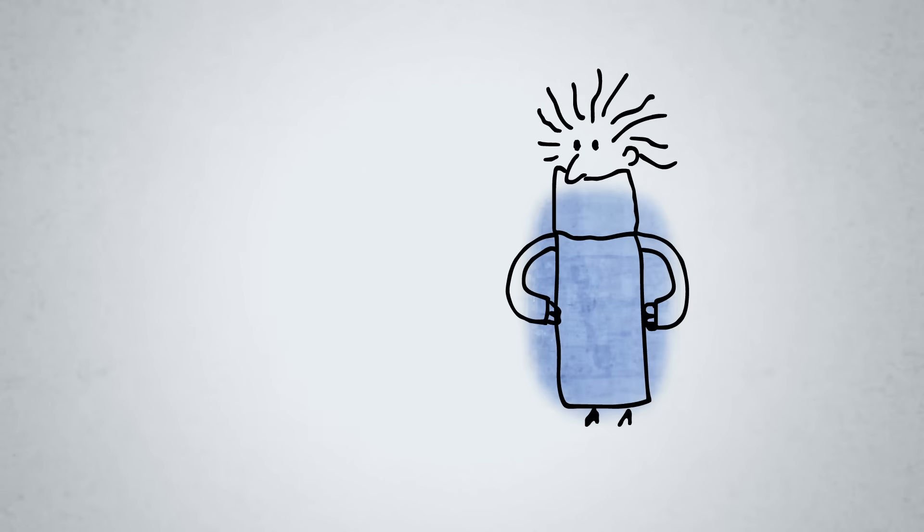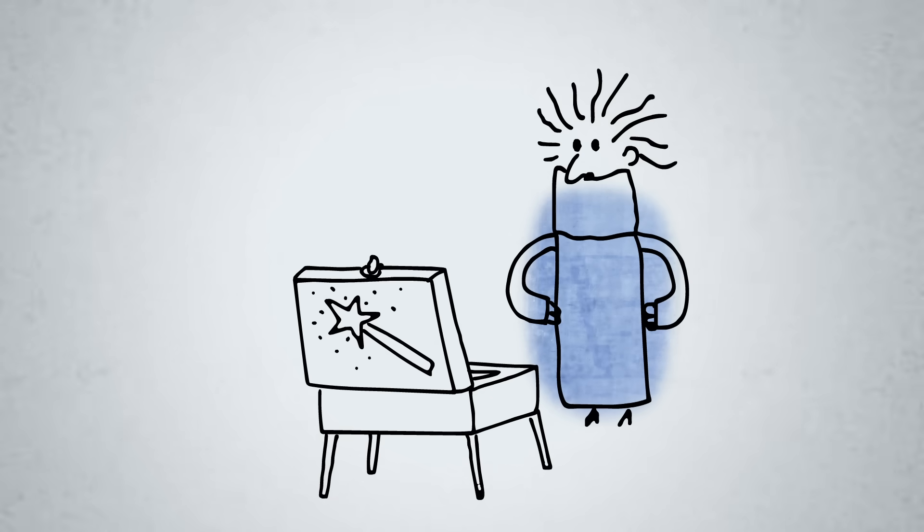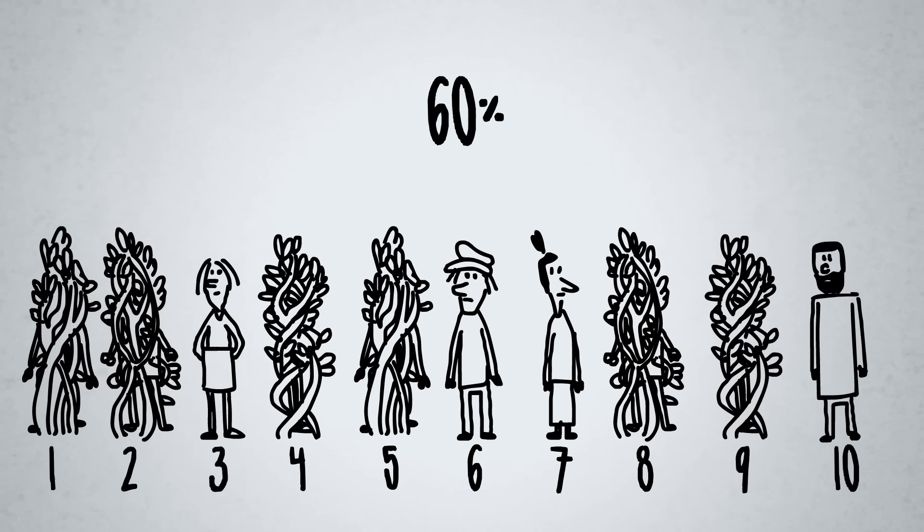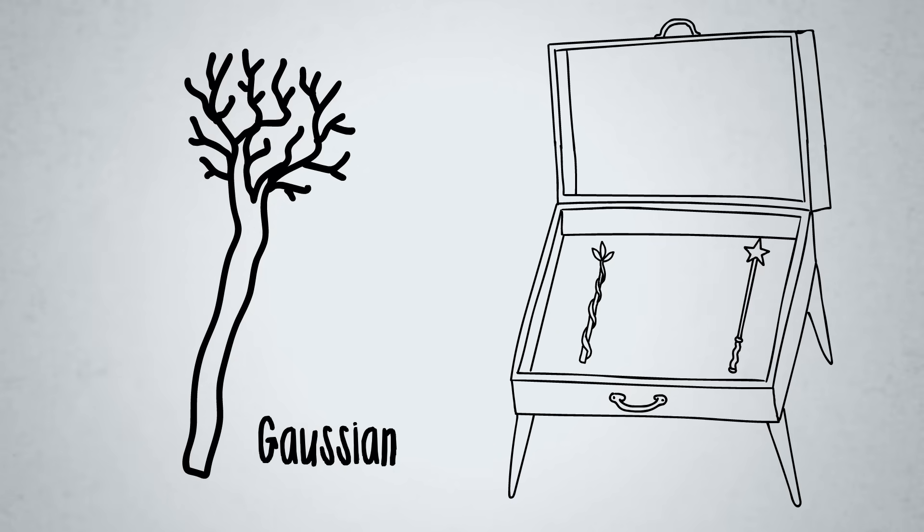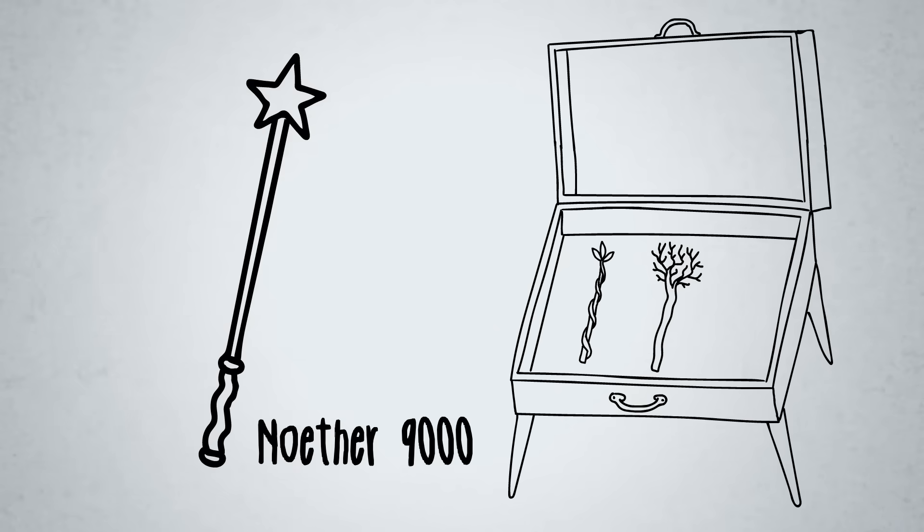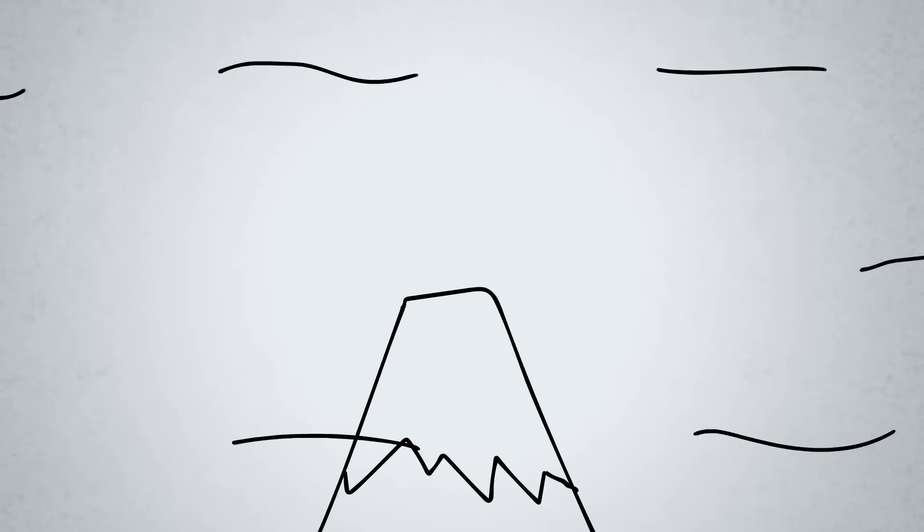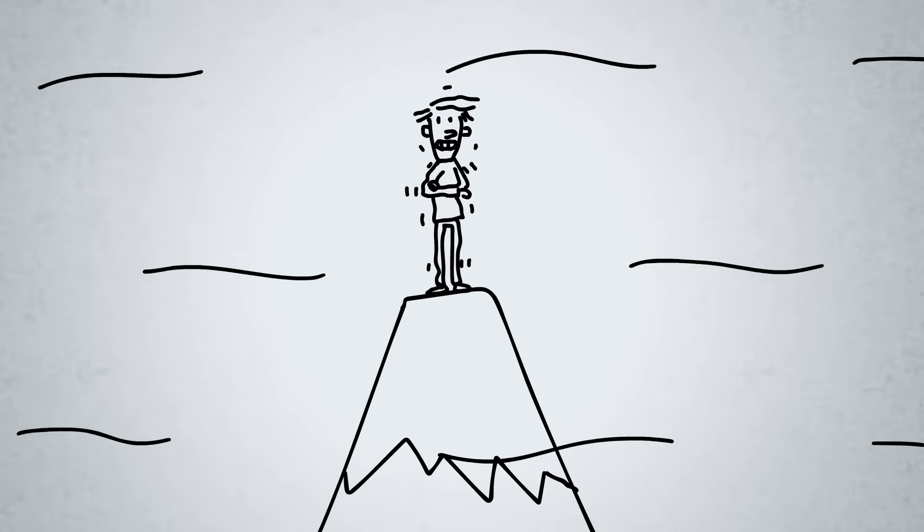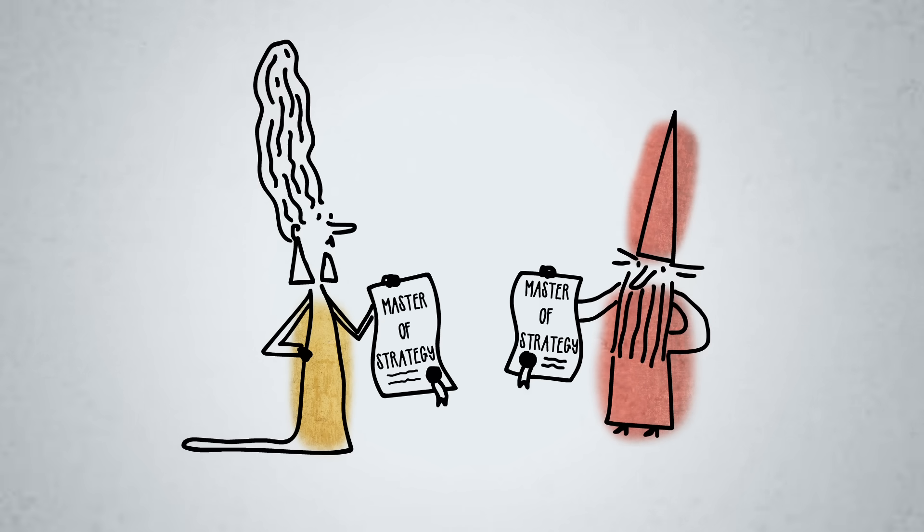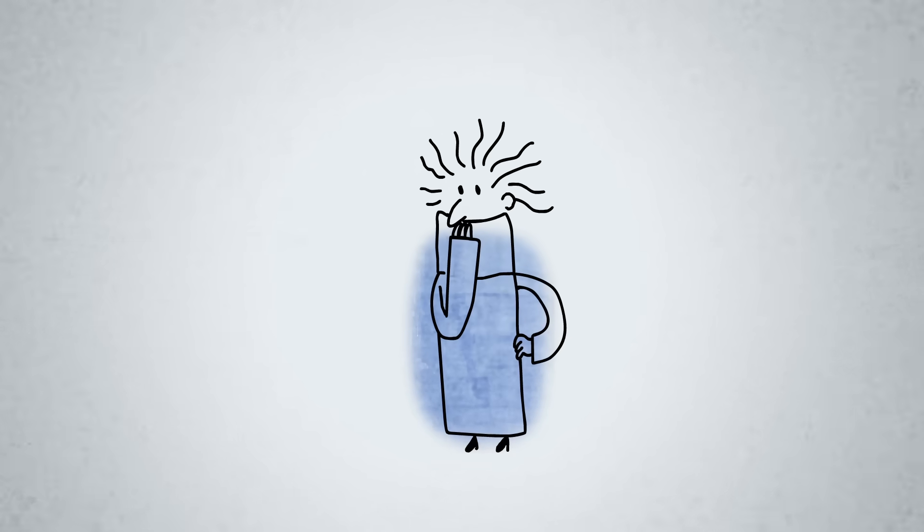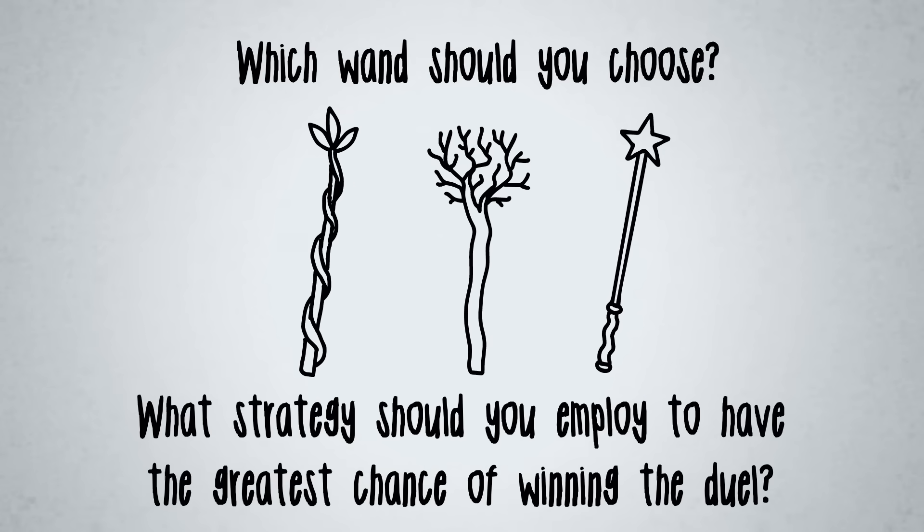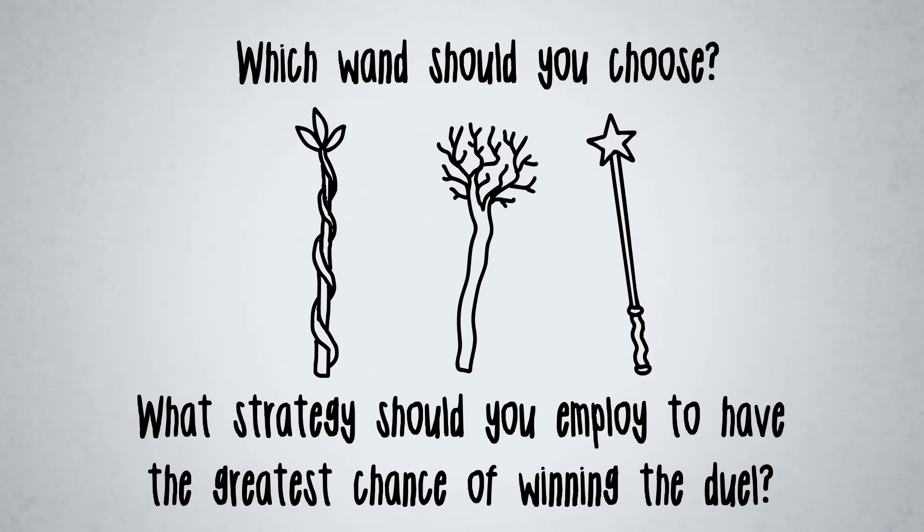Now you must choose a wand. Your wizarding house presents you with three options. The Banneker, which binds one target with vines and casts effectively 60% of the time. The Gaussian, which turns one target into a tree and works 80% of the time. And the incredibly rare Noëta 9000, which banishes one target to a distant mountaintop and casts perfectly 100% of the time. Your opponents are masters of strategy as well as sorcery, and you know they'll make the choices that maximize their own chances of success. Which wand should you choose, and what strategy should you employ to have the greatest chance of winning the duel?